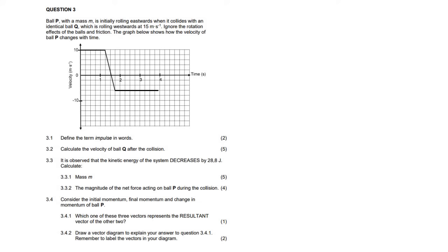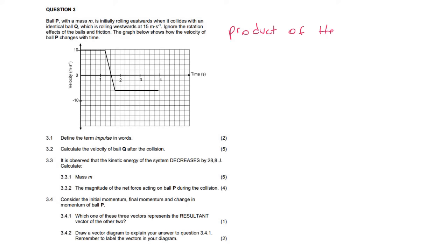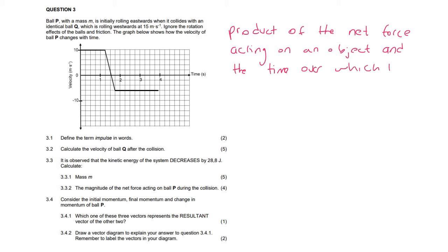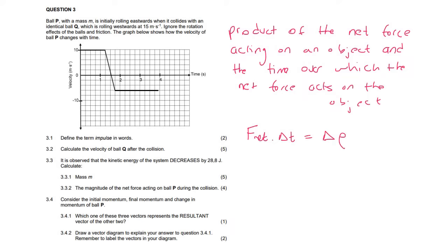Question 3.1 says define the term impulse in words. Impulse is the product of the net force acting on an object and the time over which the net force acts on the object. We know that the impulse formula is F net delta T equals the change in momentum, and this part here is called impulse. Look at what impulse actually is.